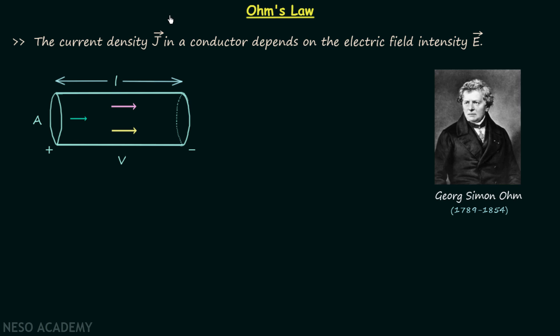In the last lecture we had discussion on the basic circuit element resistor, and in this lecture we are going to understand what is Ohm's law. Ohm's law is named after German physicist Georg Simon Ohm. In 1827, Georg Simon Ohm performed measurements of applied voltage and current through different electrical circuits. To justify the results of his experiment, he used a more complex equation than the modern form of Ohm's law. In this lecture we will focus on the modern form of Ohm's law.